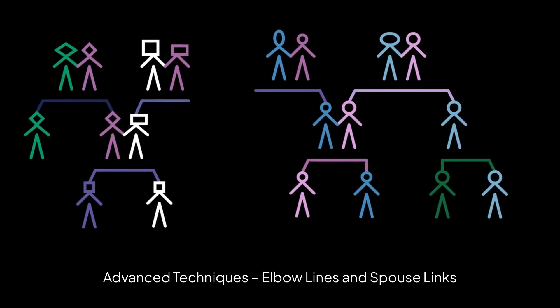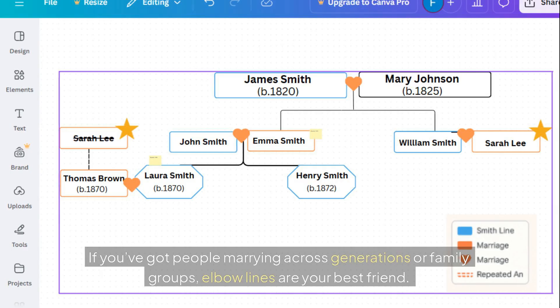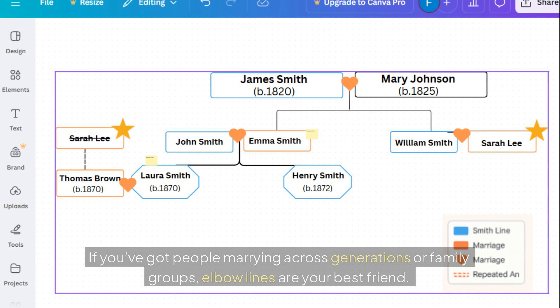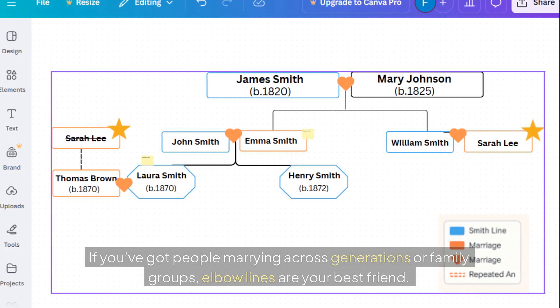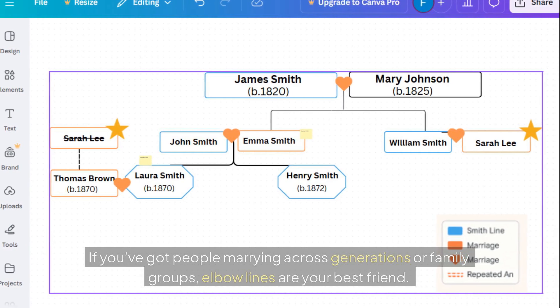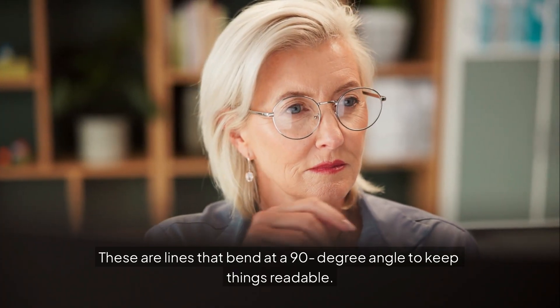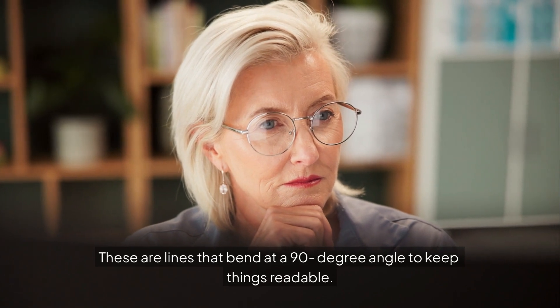Advanced techniques: elbow lines and spouse links. If you've got people marrying across generations or family groups, elbow lines are your best friend. These are lines that bend at a 90-degree angle to keep things readable.